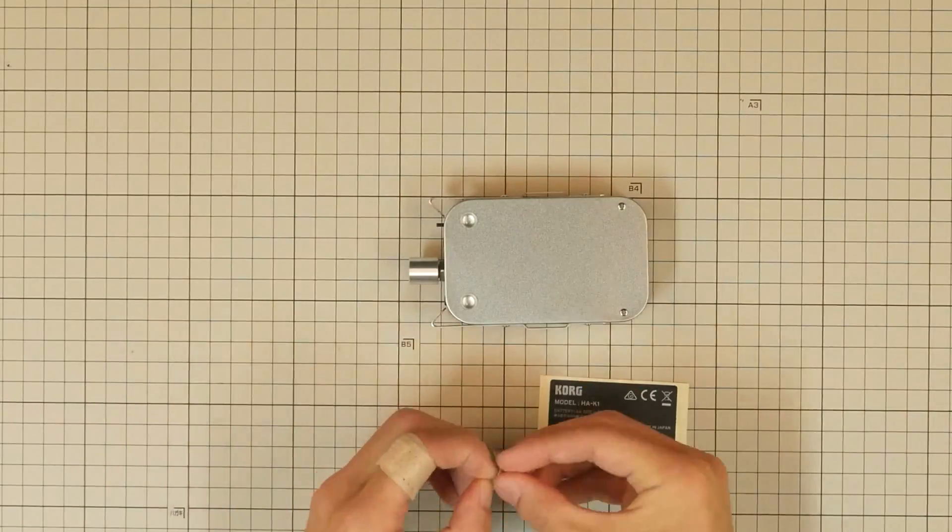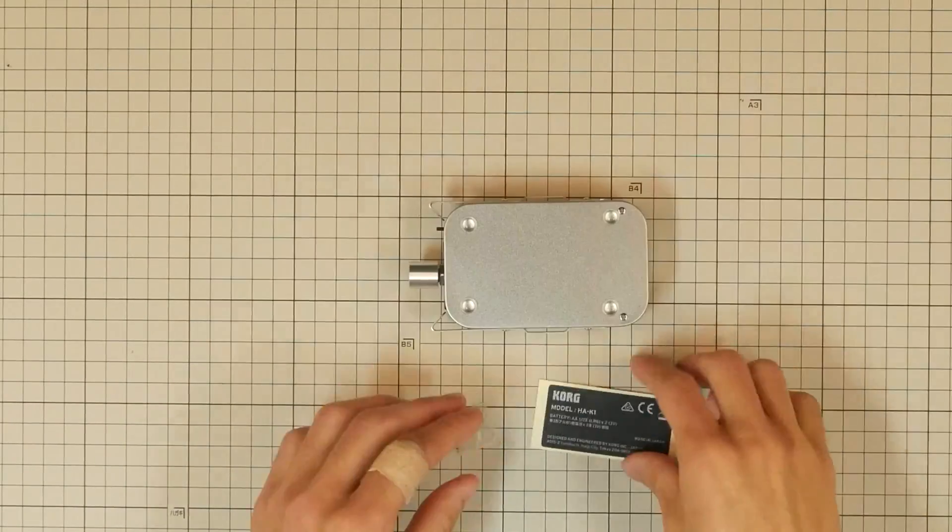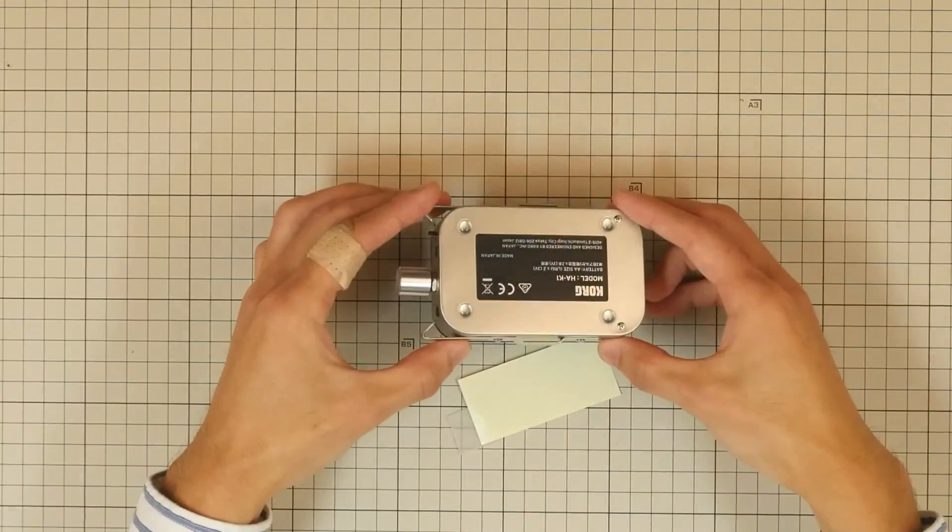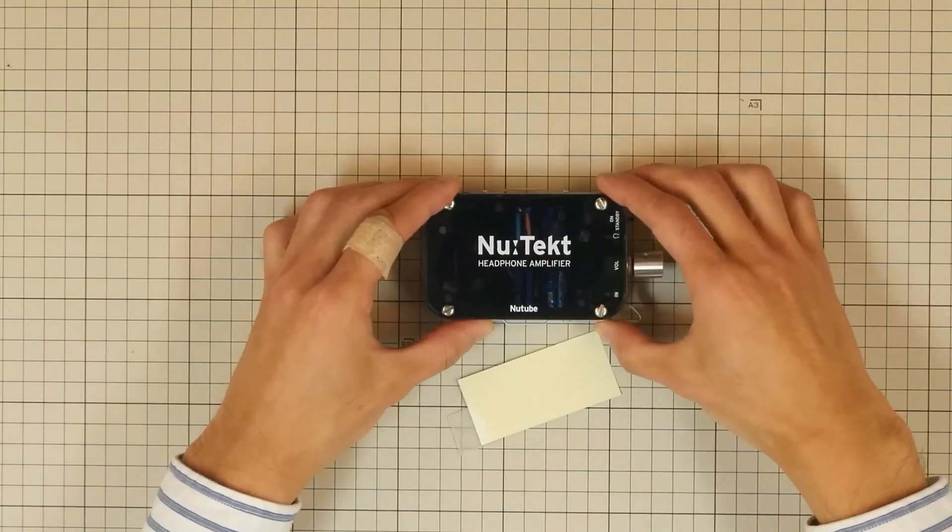Lastly, attach the rubber feet and rating label onto the bottom of the case. Make sure not to cover up the screws or cover up the label with the feet. And we're done!